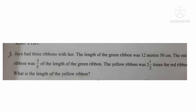Come to the next question. Jaya had 3 ribbons — red ribbon, green ribbon, and yellow ribbon. The length of the green ribbon was 12 meter 50 centimeter. The red ribbon was 3 by 5 of the length of the green ribbon. We have to first find the length of the green ribbon in centimeters by converting 12 meters. The yellow ribbon is 2 and 1 by 2 times the red ribbon, and finally we have to find the length of the yellow ribbon.